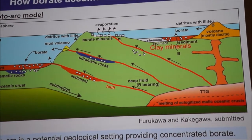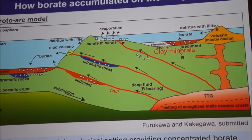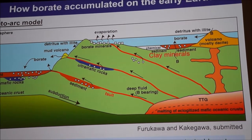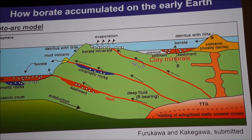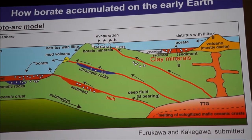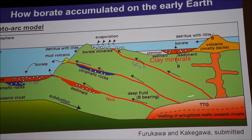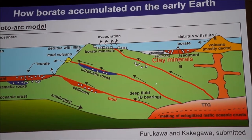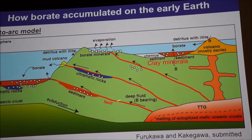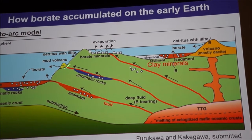So how did borate accumulate on the early Earth? There is a hot discussion about whether oceans were present on the early Earth. But oxygen isotope evidence from zircon found in Western Australia suggests the presence of granitic crust at that time. This figure shows a proto-ocean model, one possible explanation for the formation of granitic crust. The deep ocean extracts boron from mafic rocks and concentrates borate around the proto-ocean basin.